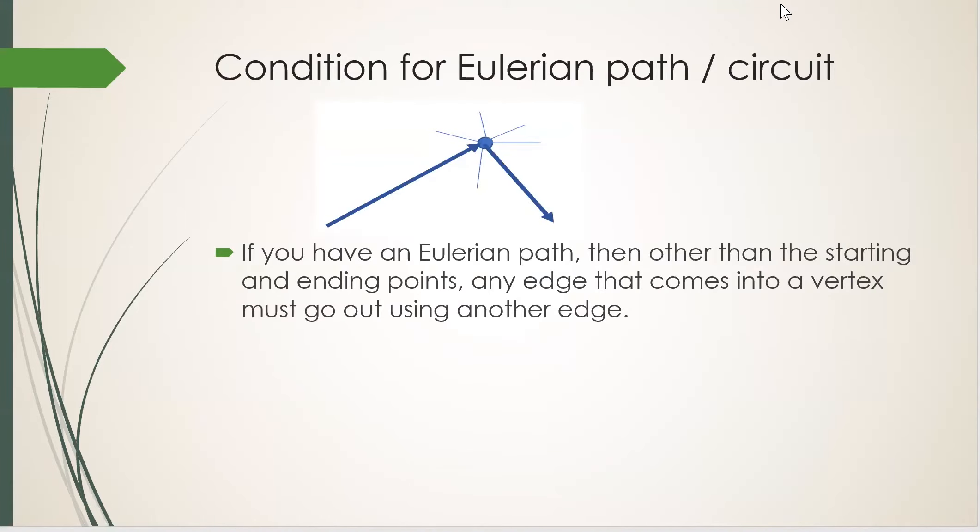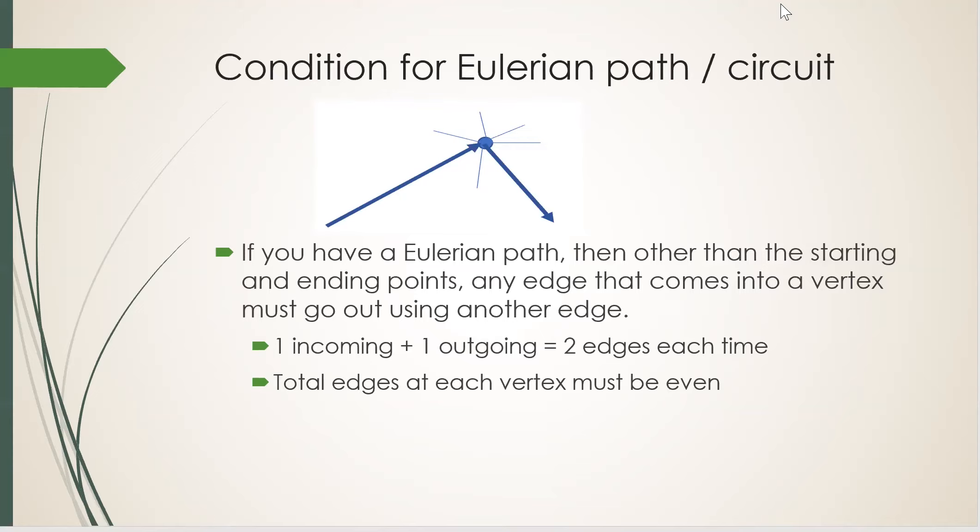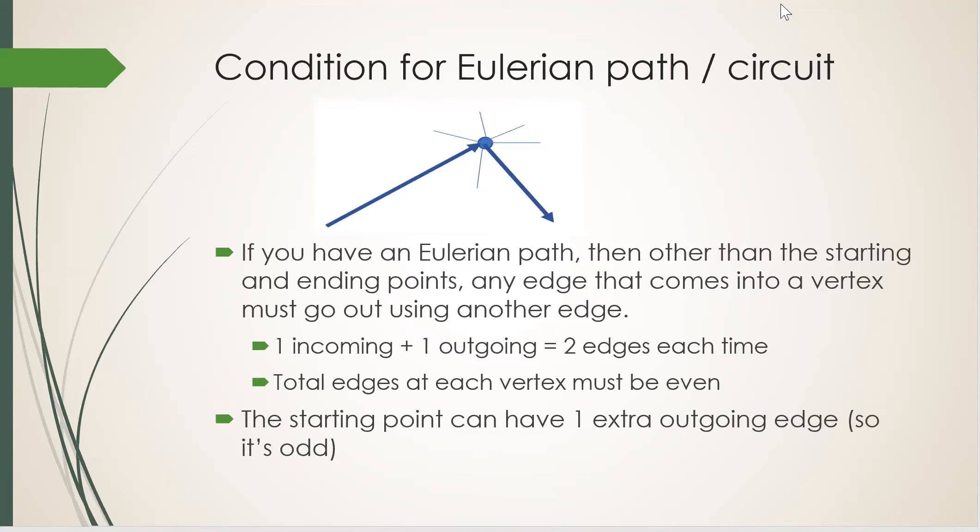Euler figured out when it is possible to trace a graph, meaning when there is an Eulerian path. If there is an Eulerian path, then other than the starting and ending points, any edge that comes into a vertex must go out using another edge. So each time there's one incoming and one outgoing edge equals two edges. That means the total edges at each vertex must be even. Except for the starting and ending points. The starting point has one extra outgoing edge, so it's an odd number of edges. The ending point has one extra incoming edge, so also odd number of edges.